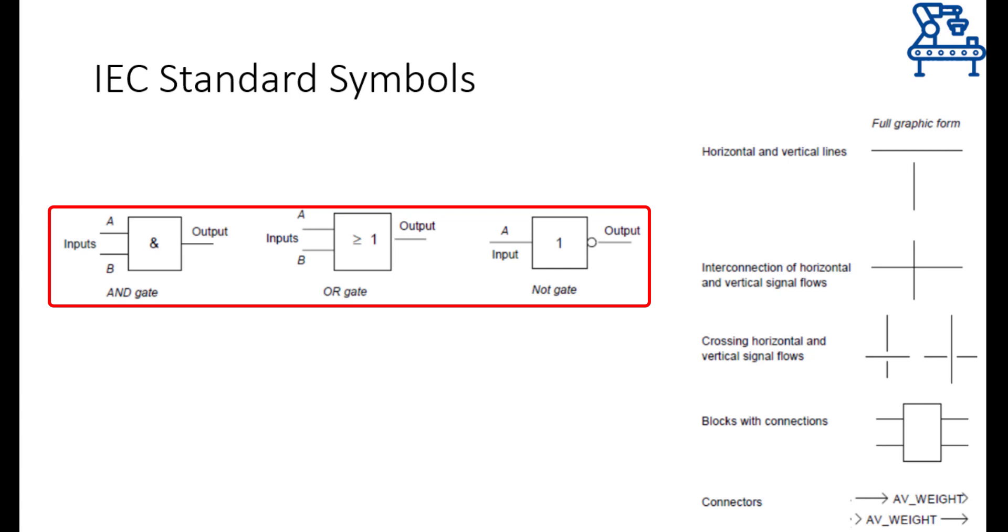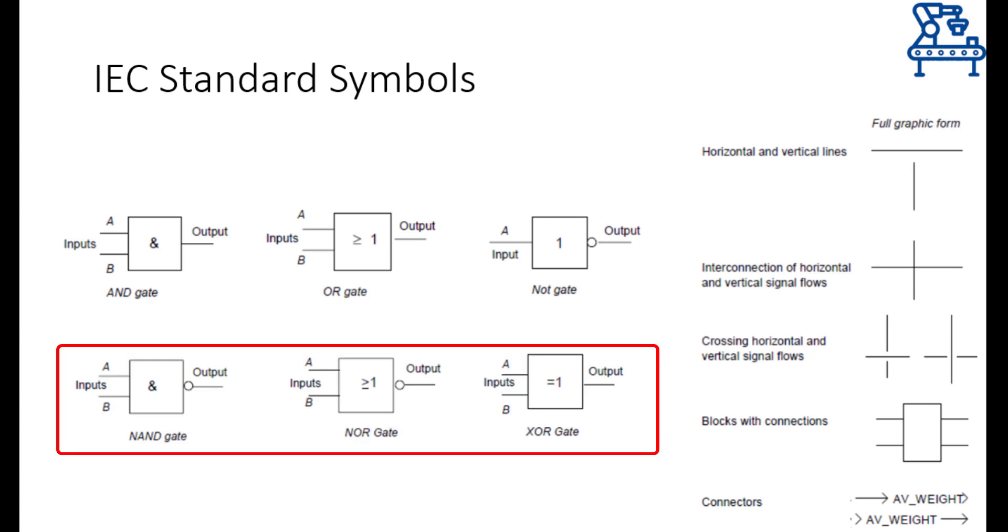As an example, these blocks represent AND, OR and NOT gates implemented in the function block diagram. Look how the block has been named using this specific symbol. Moreover, implementation of NAND, NOR and XOR or exclusive OR gate is shown over here. Appreciate that how simple function block diagrams can be as compared to ladder diagrams.